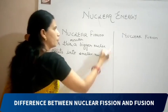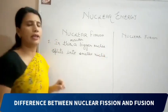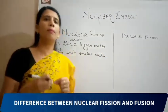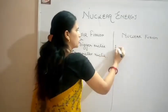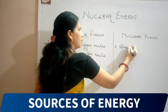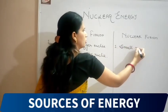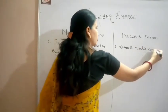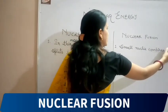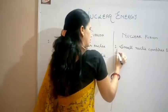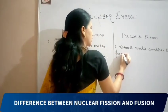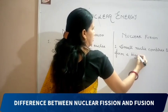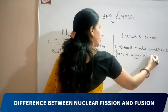In nuclear fusion reaction, smaller nuclei combine to form a bigger nucleus. This was the first point of difference.